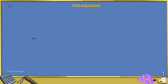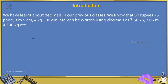We have learnt about decimals in our previous classes. We know that 50 rupees 75 paise, 3 meter 5 cm, 4 kg 500 gram etc. can be written using decimals as rupees 50.75, 3.05 meter, 4.500 kg etc.